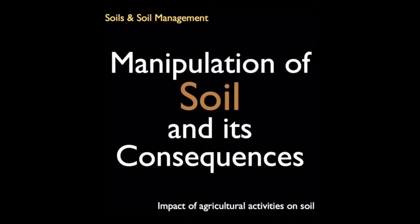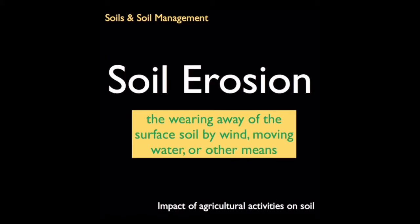Having presented the nature and properties of soil, we are now focusing our attention on the consequences of manipulating soils for growing plants. We have already seen that one major consequence of soil manipulation is the possibility of compaction. In this unit, we address another consequence of soil manipulation, that of erosion.